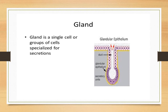A gland is a single cell or a group of cells specialized for secretion. The gland has a secretory unit lined with glandular epithelium and a supporting unit called the stroma. Whenever we describe a gland, we describe it in two terms: the parenchyma, which is the functional or secretory unit, and the stroma, which is the connective tissue or supporting portion.